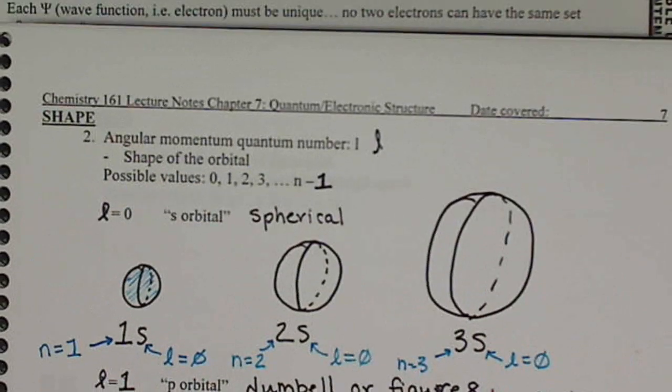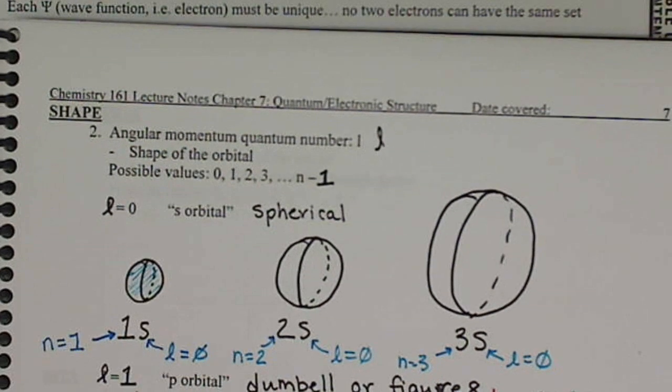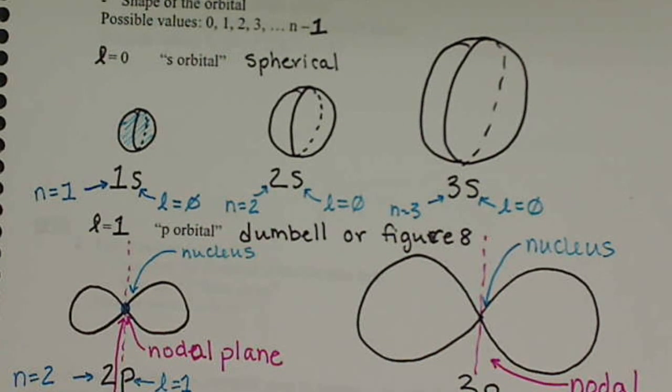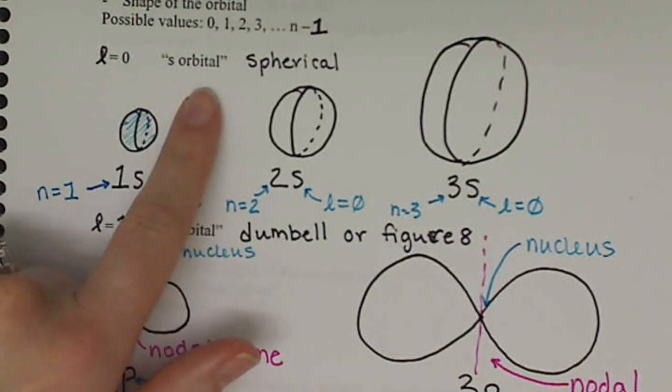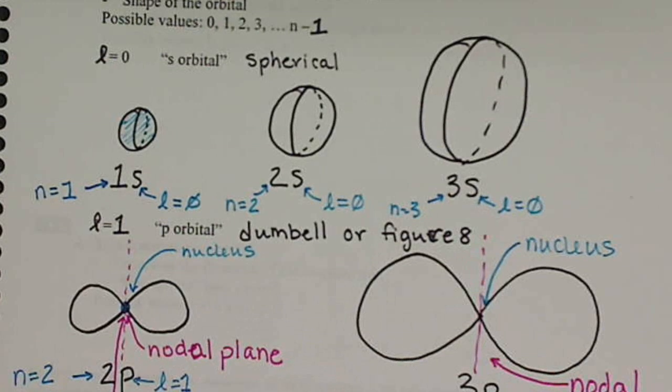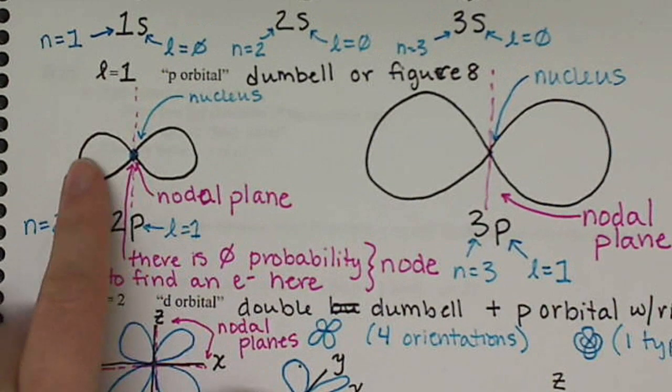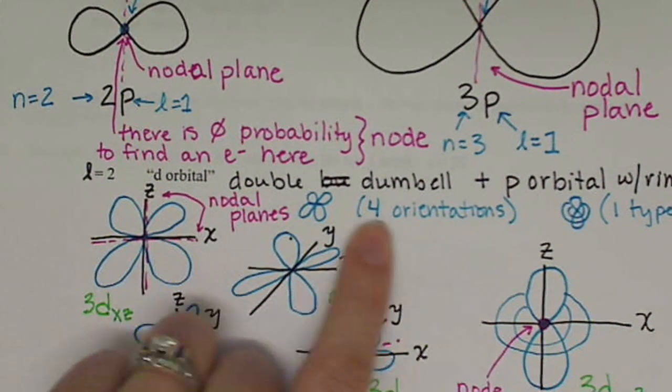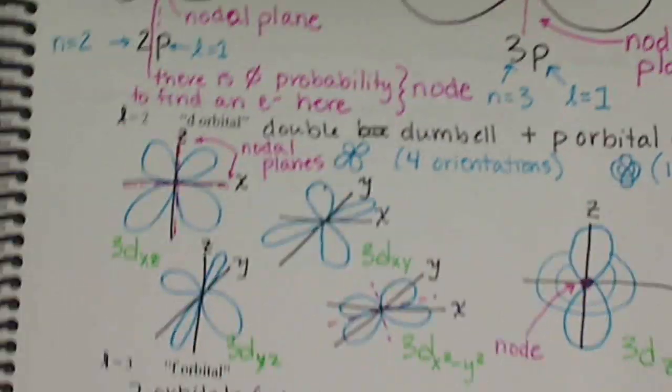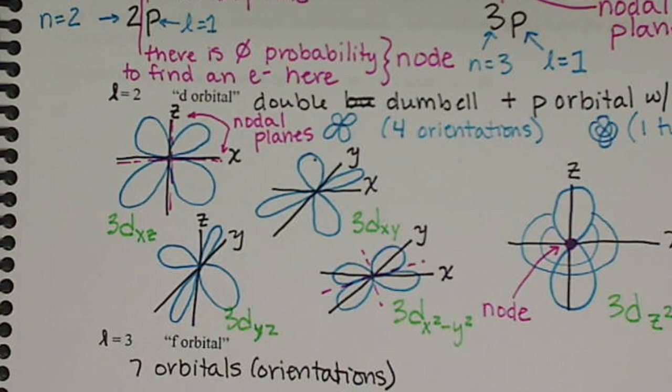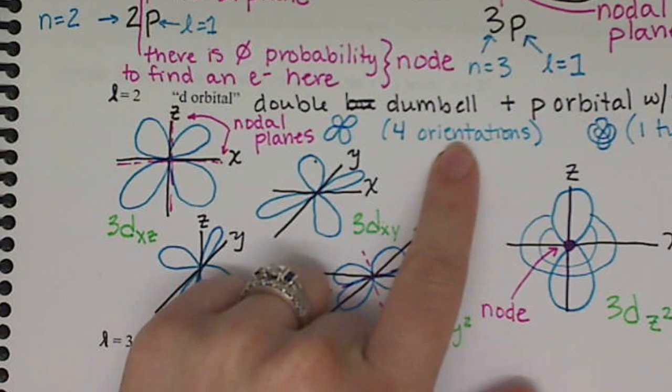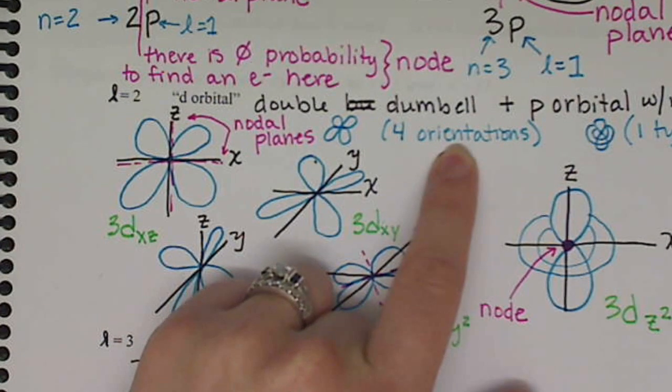Last video, we talked about the angular momentum quantum number, and we learned that we had four different shapes of orbitals. We're focusing on just three of them: the s orbital, which is spherical in shape, the p orbital, which is dumbbell shaped, and the d orbital, which is the double dumbbell. With the d orbital, I got a little bit into the different directions or orientations that the orbitals can take.